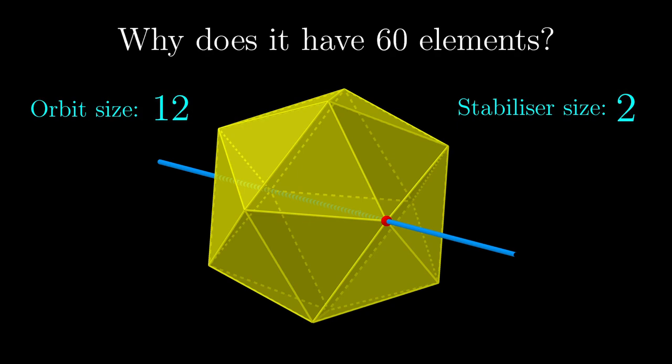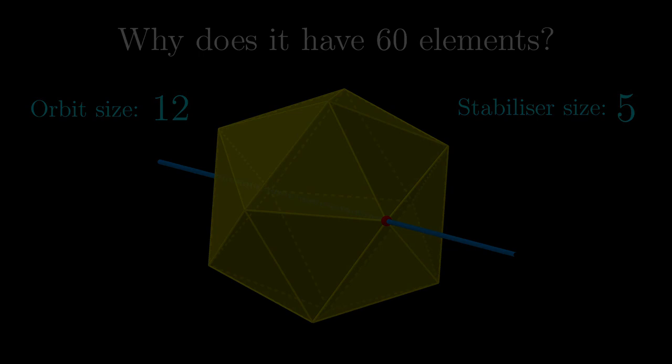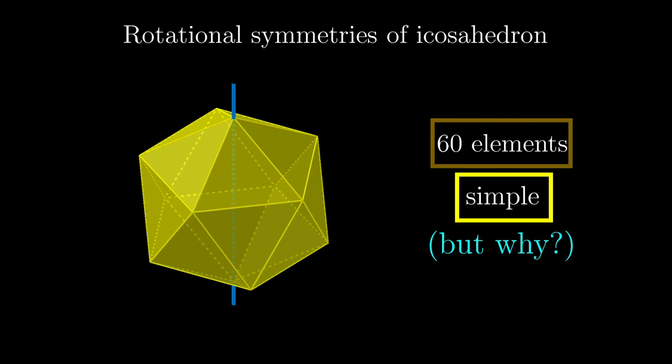And if we consider the action on vertices, the orbit size would be 12, and the stabiliser size would be 5, which also gives us 60. So now we know why there are 60 rotational symmetries, but why is this group simple?